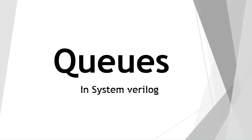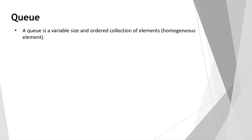Today I'm going to discuss queues in SystemVerilog. Before we move forward, I hope everyone knows arrays, because queues are similar to arrays, so if you know arrays, queues are very easy to understand. A queue is a variable size and ordered collection of elements. The elements are homogeneous, meaning elements of the same data type.